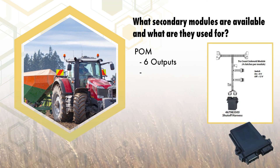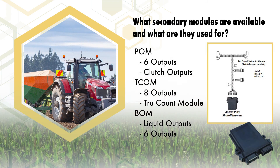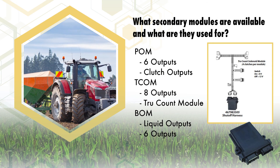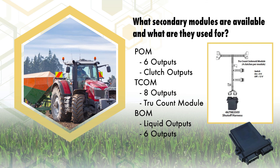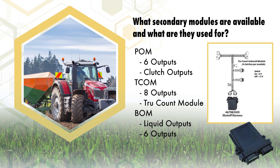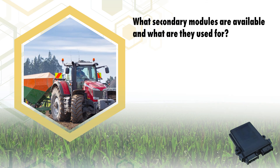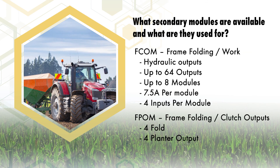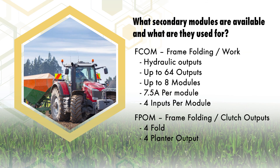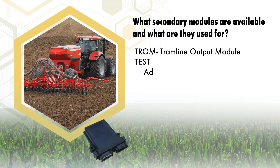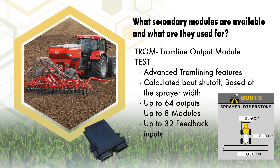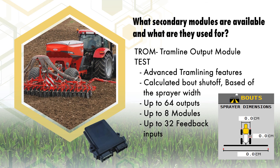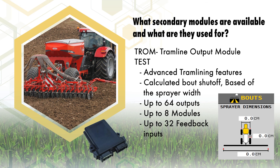Output modules allow control of different outputs such as row clutches and liquid application systems. Common output modules are POM, TCOM, and BOM. For frame folding, FCOM and FPOM provide for customization to a wide variety of planter setups. T-ROM is used when tram lining and collects feedback and provides up to 64 different outputs for bout shutoff and advanced tram lining features.